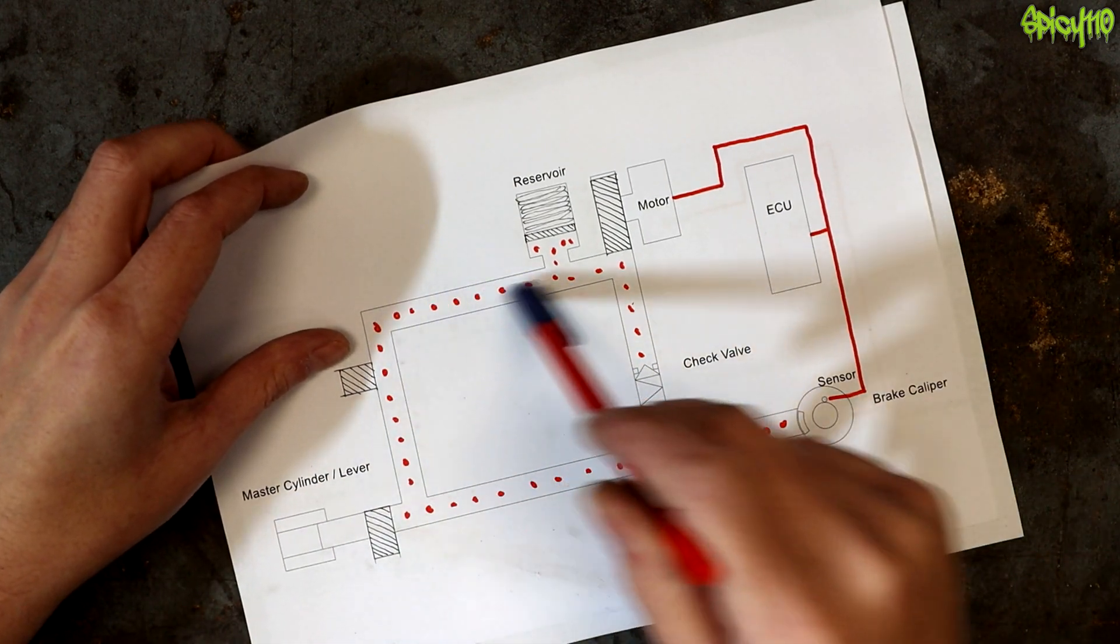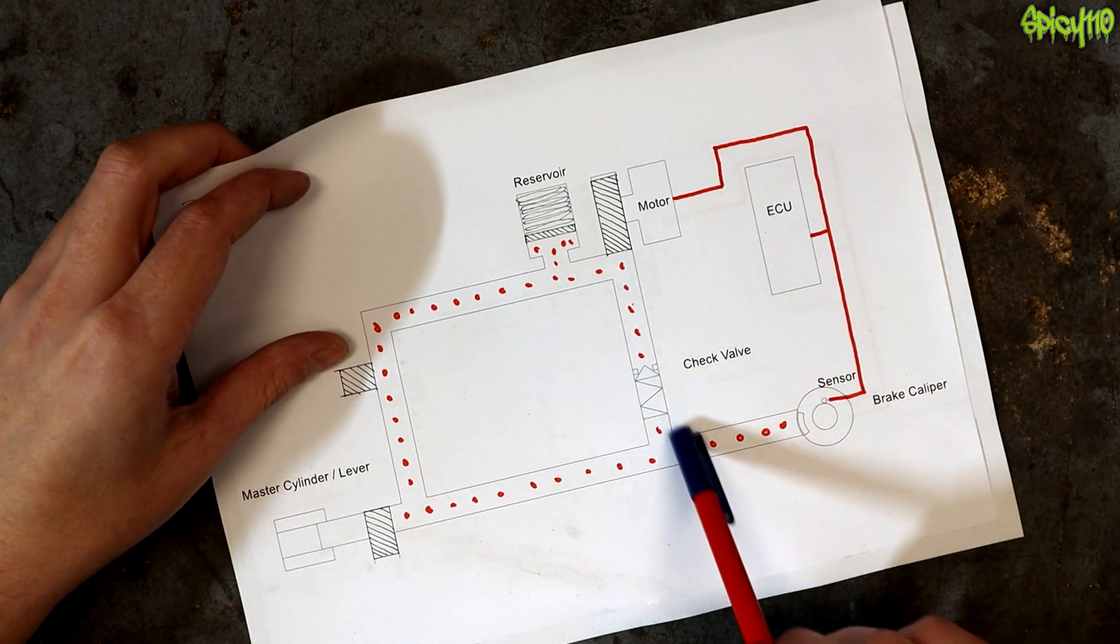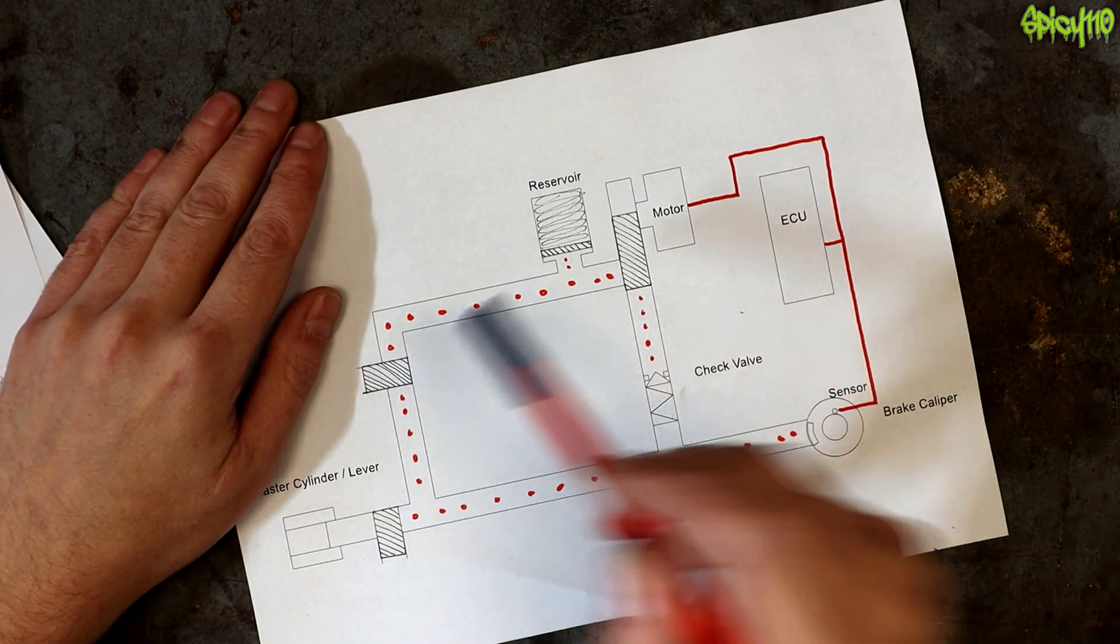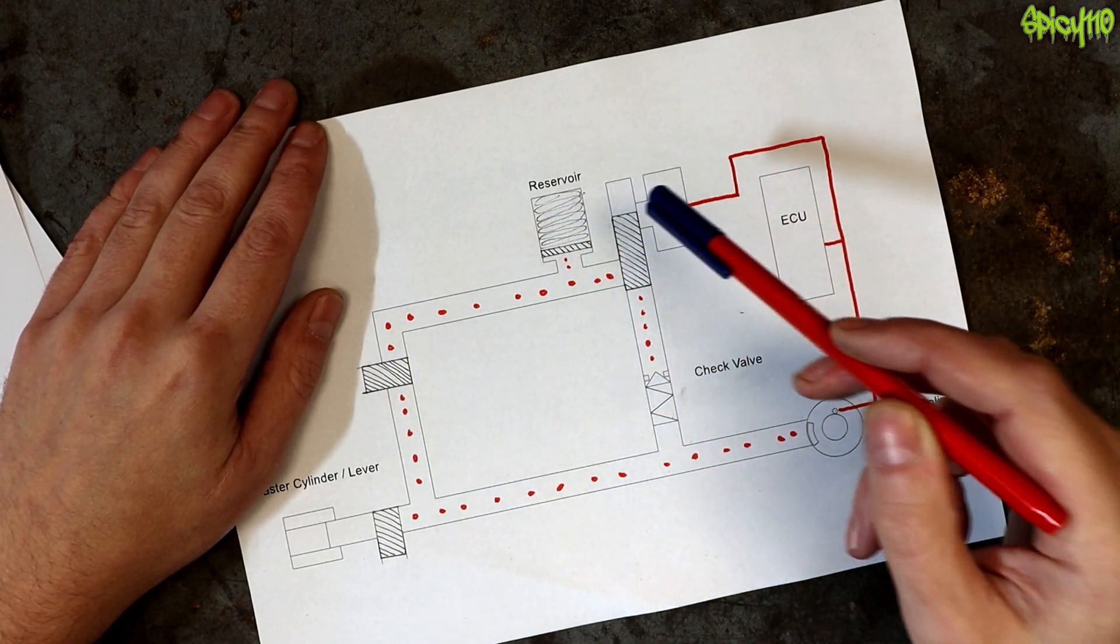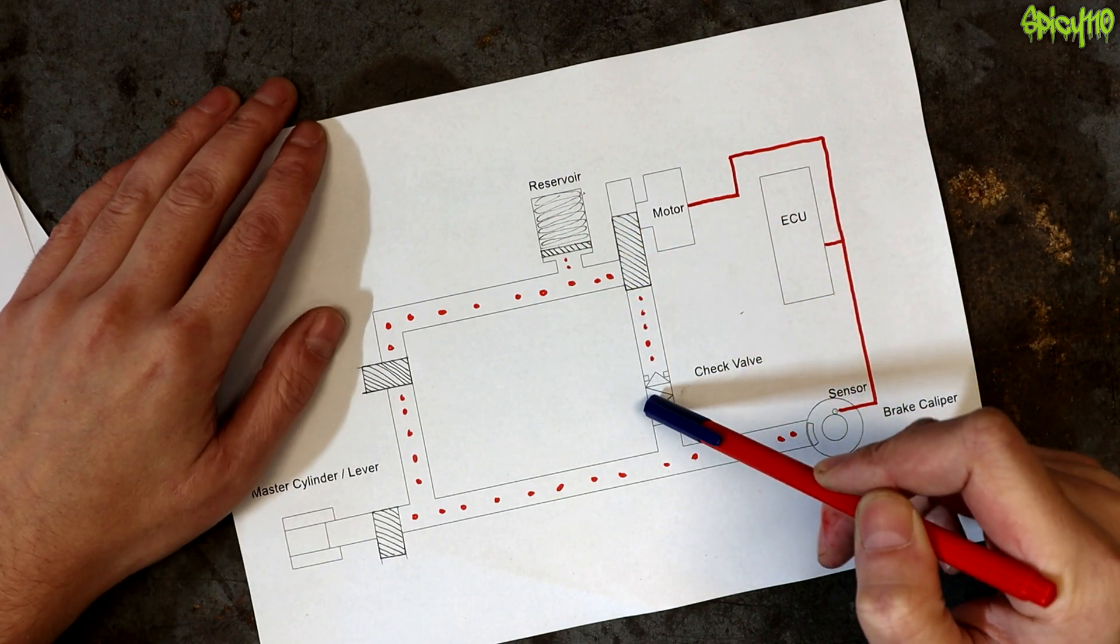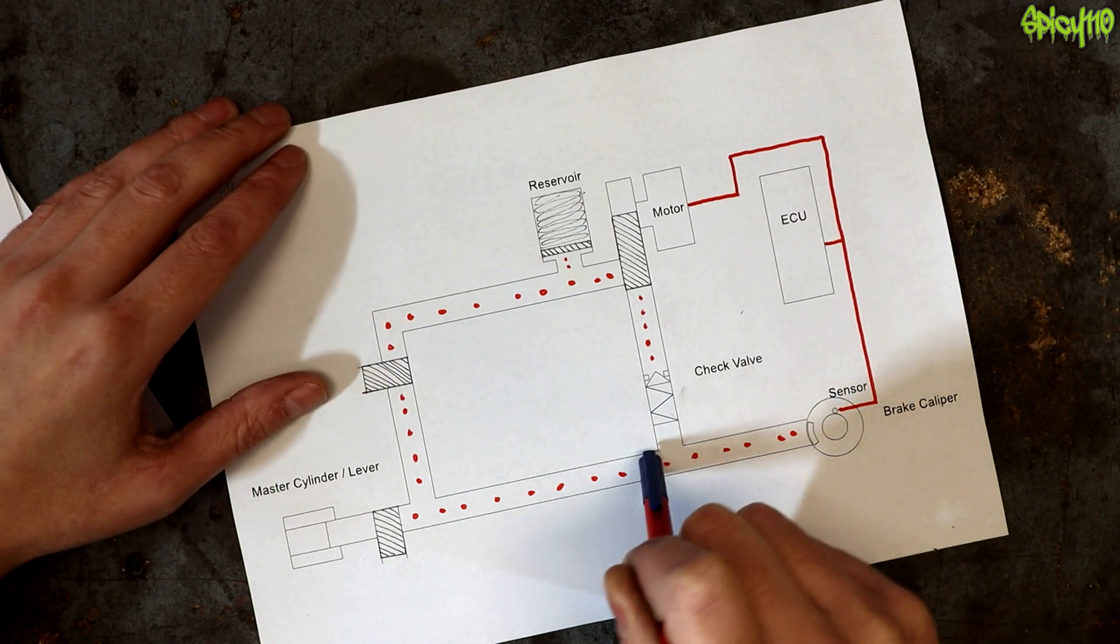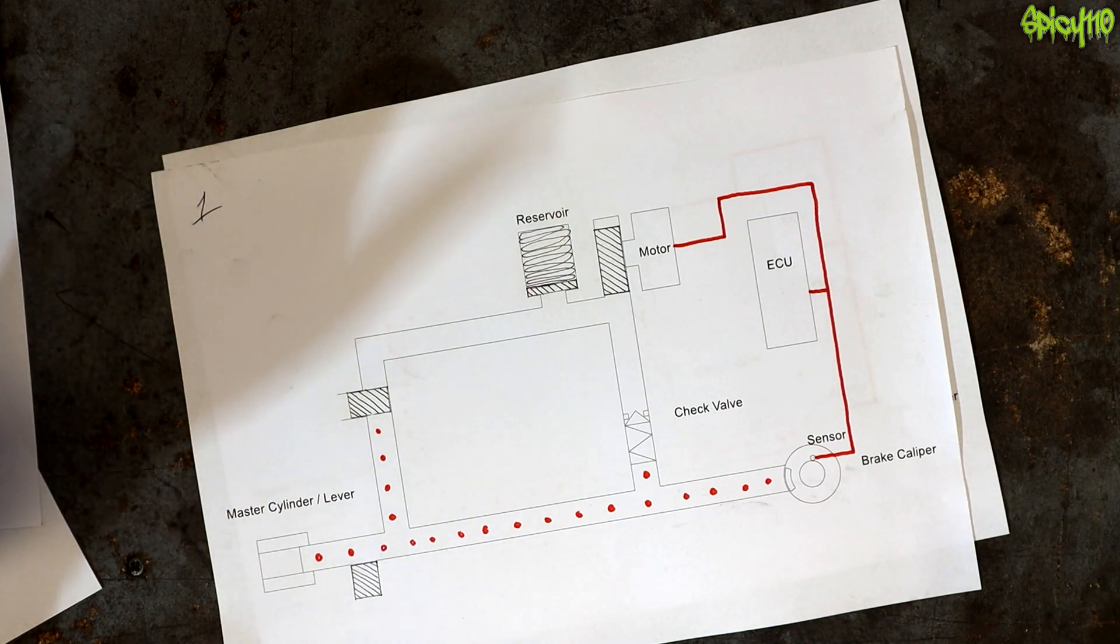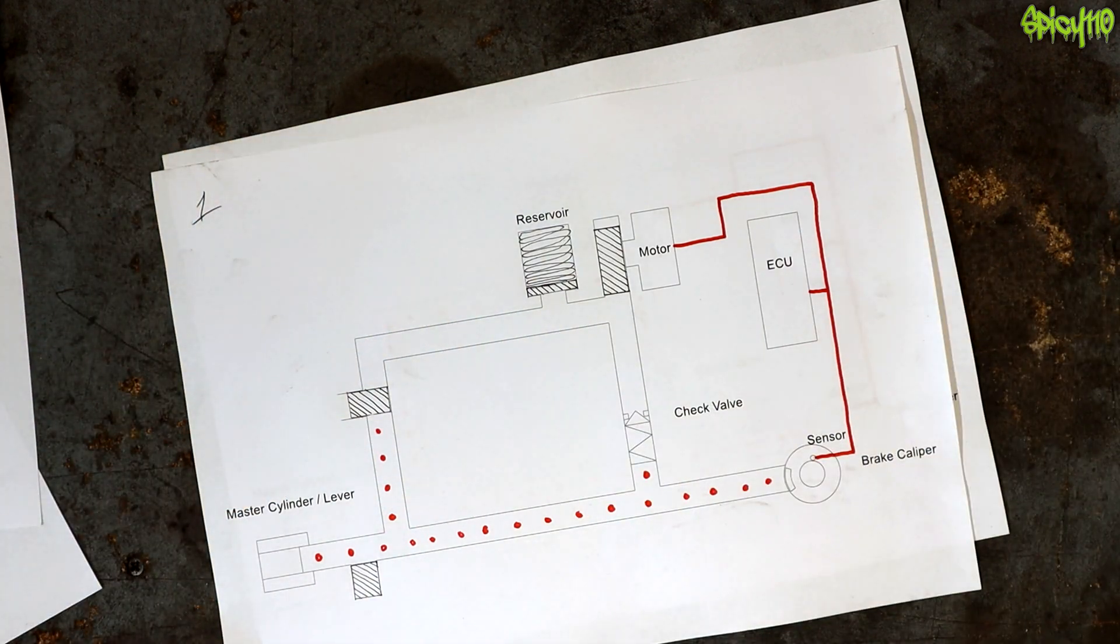But to do that, because of the extra volume that it's created, it needs to re-pressurize your line. So then it closes the dump valve. It uses the fluid in this reservoir. It pumps it down here under higher pressure so it can pop through the one-way valve, which re-pressurizes your brake line and gives you braking back, at which point you are braking again. It then checks. If you're not doing it right again, we're going back into the cycle.